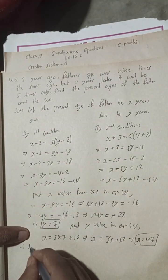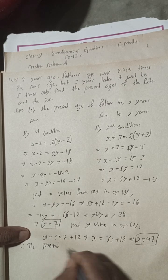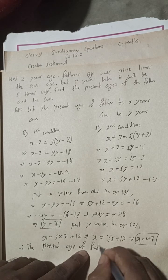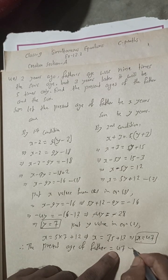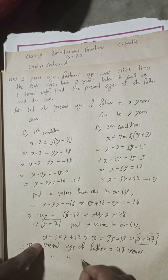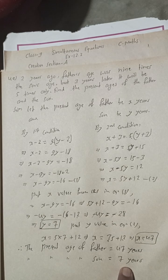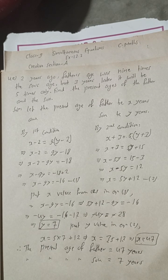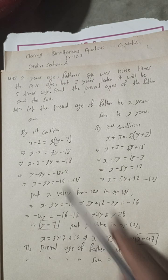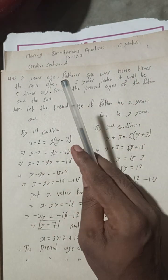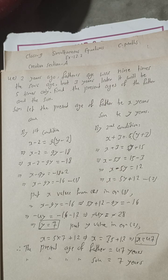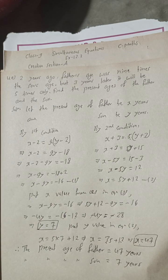Therefore, the present age of the father is x equals 47 years, and the present age of the son is y equals 7 years. This is the complete solution of 4E. In the next video I will come with 4F of creative section A. If you're watching this video, please like, share, and subscribe to the channel on YouTube and follow me on Facebook. Don't forget to check the playlist for other uploaded videos. See you in the next video — Radhe Radhe, Jai Sri Krishna.